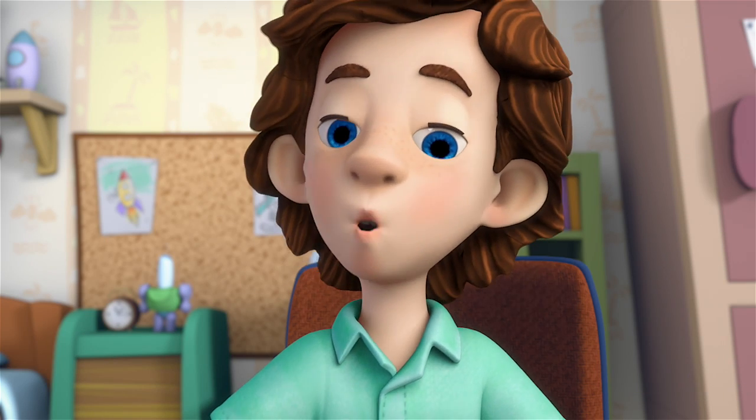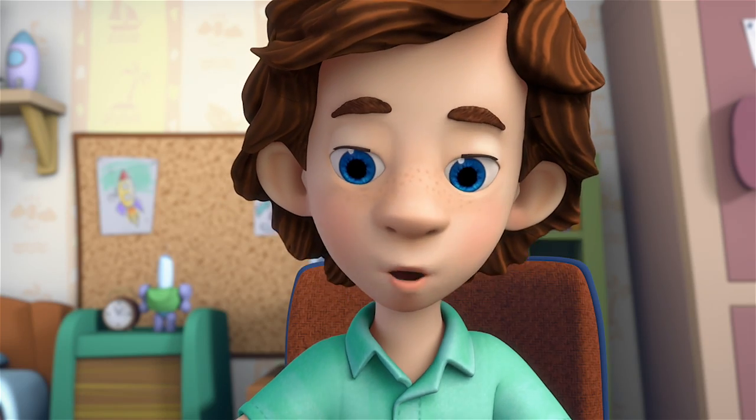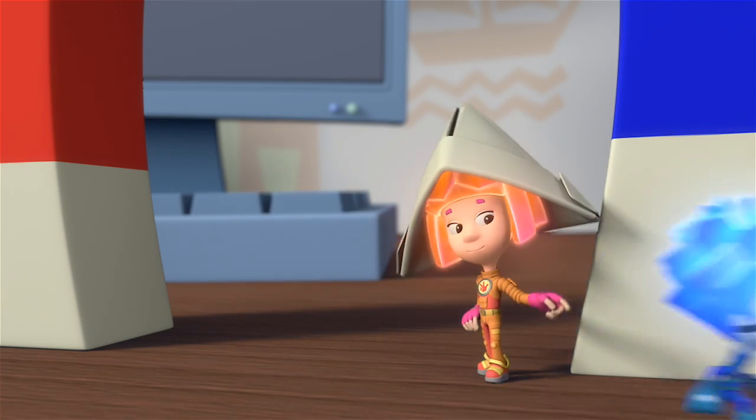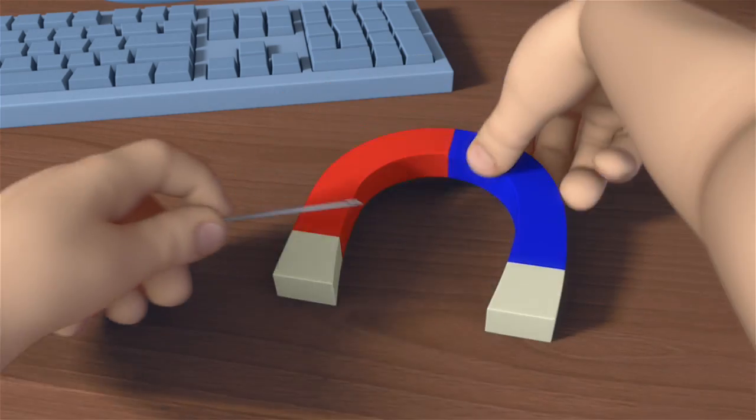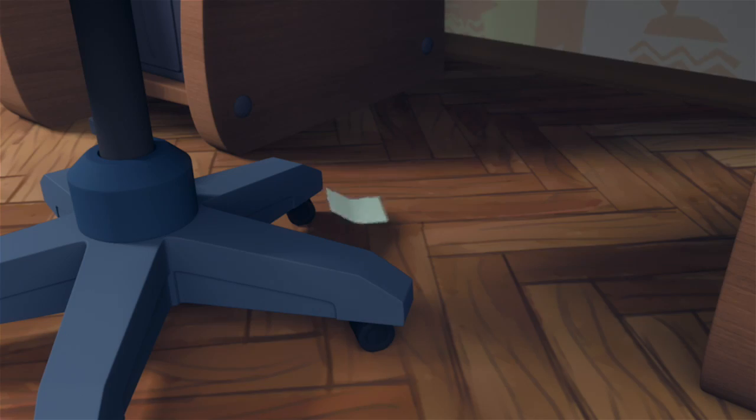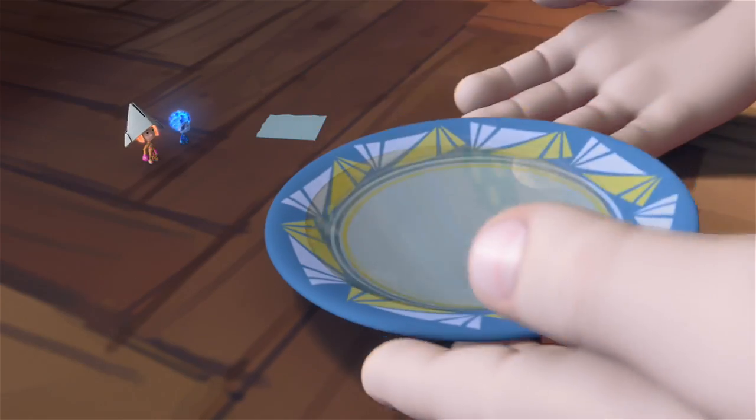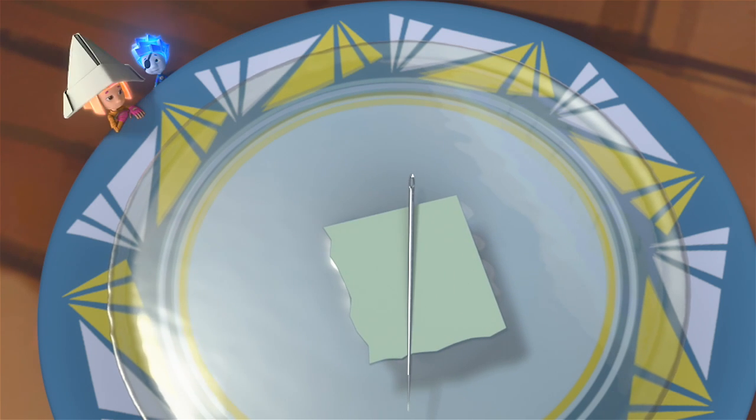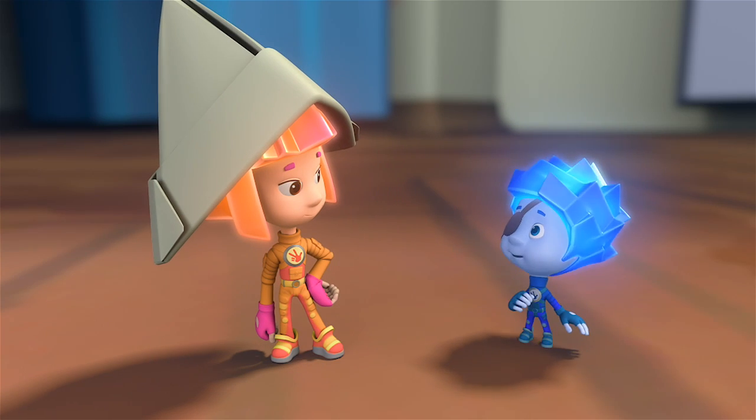Tom Thomas says there's no compass around. Simka suggests they make one themselves. They can use a needle - they just have to magnetize it. Tom Thomas asks how it's supposed to turn around. Simka says in a saucer of water. They work on creating the compass.